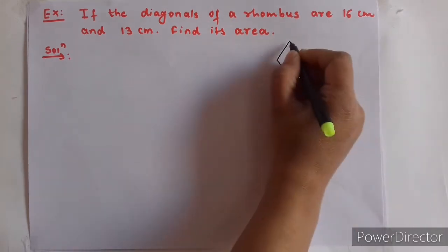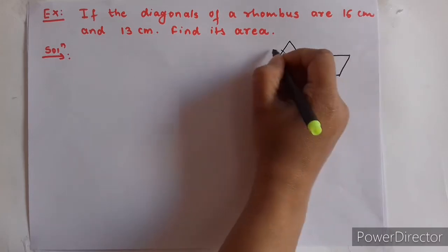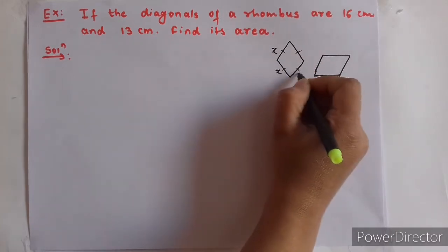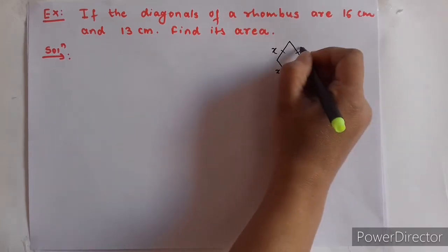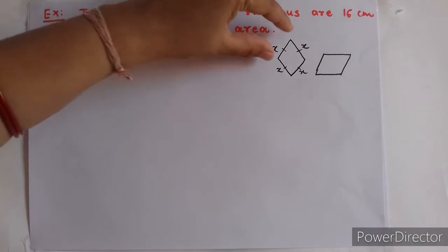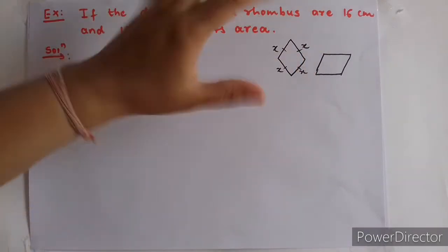What happens is that in a rhombus all sides are equal. If one side is x, then all four sides are x — for example 5 cm or 5 meters; all sides are the same.